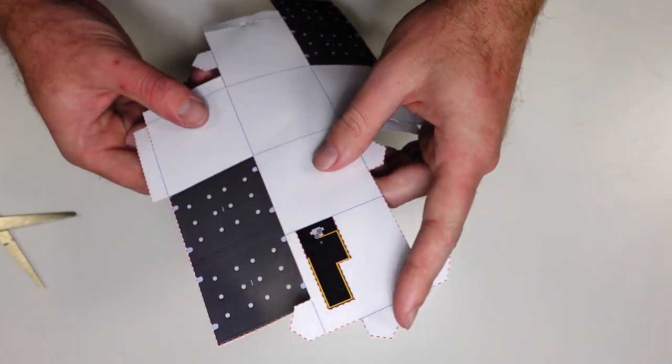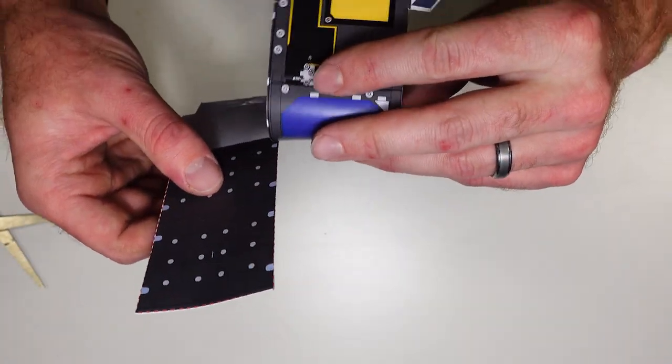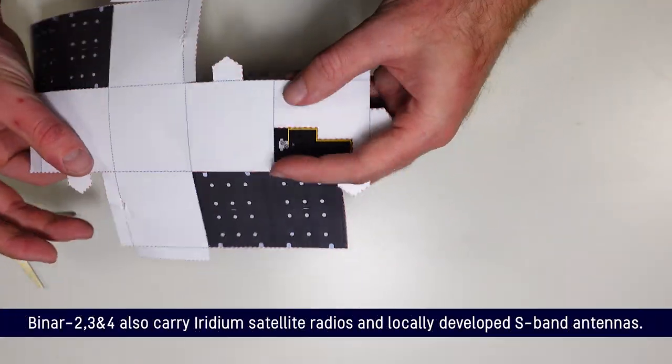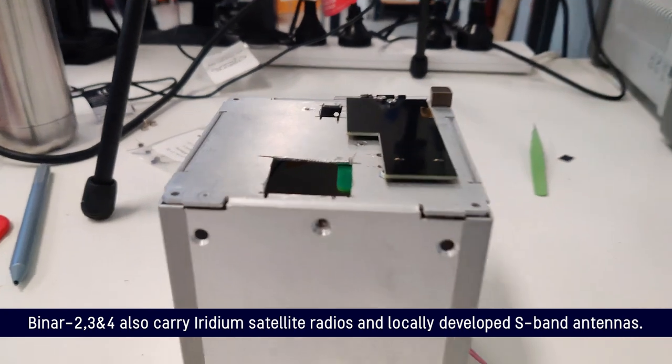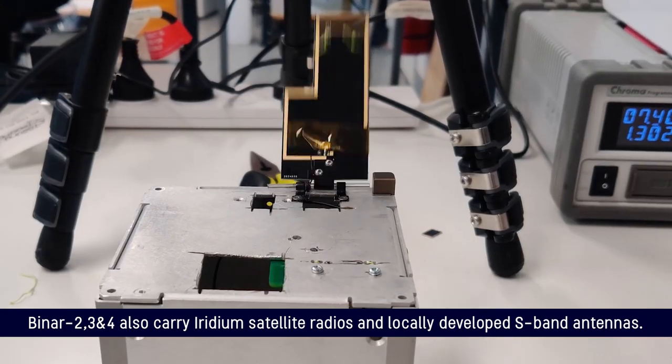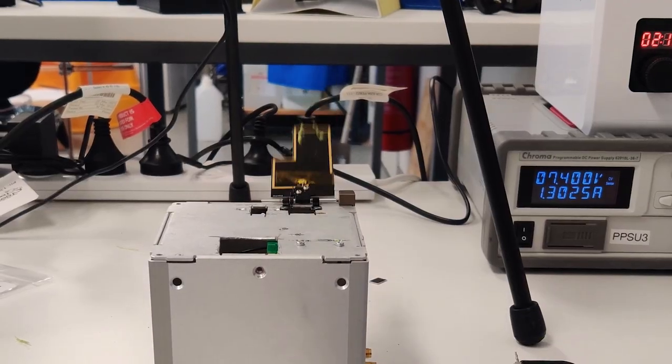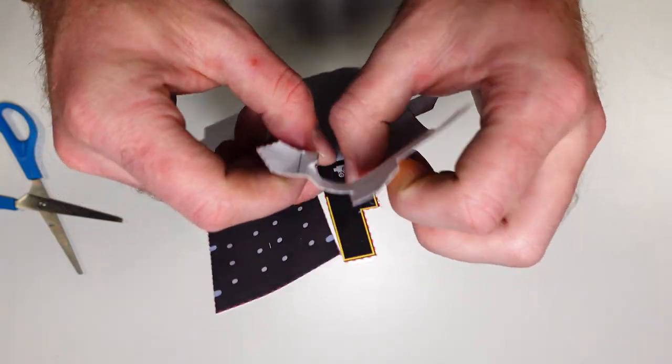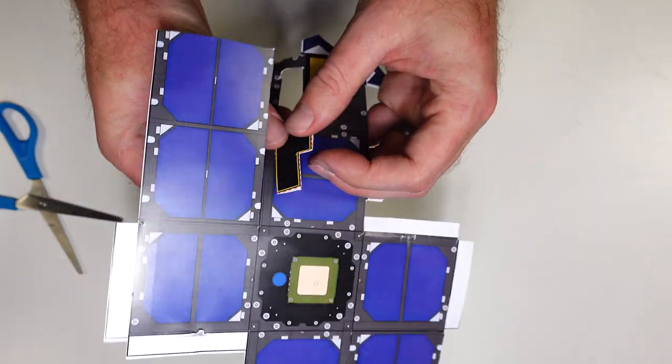The other thing we have to cut out. So this is our deployable antenna. So for Binar 2, 3, and 4 we've designed our own radio antenna to send signals back to earth and to get a better signal we're actually going to have that deploy. So our little paper CubeSat needs a deployable antenna as well.